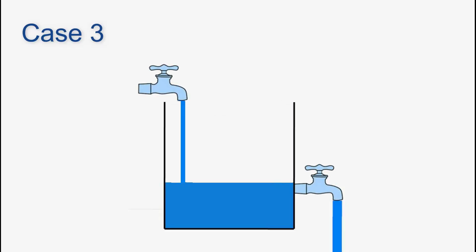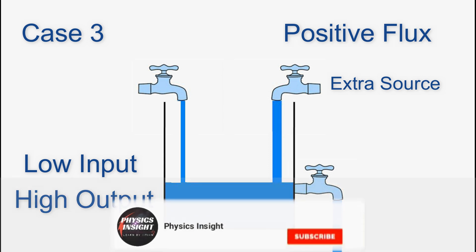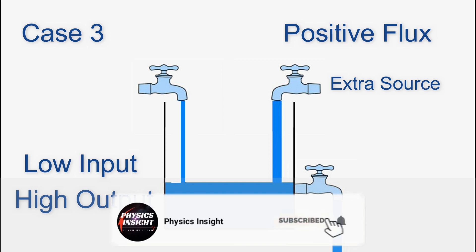Case 3. Consider a case when we get more water from the outlet in comparison to the amount of water given from the inlet. In this case, we have positive flux. This means we have a source inside the tank which increases the amount of water. This system having positive flux acts as a source. I hope you understand the physical picture of flux. Comment down below if you have any doubt.